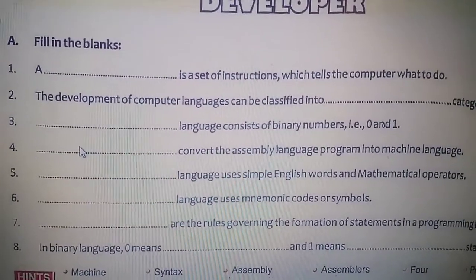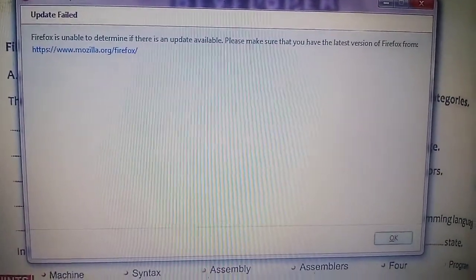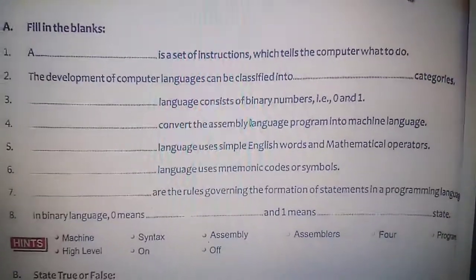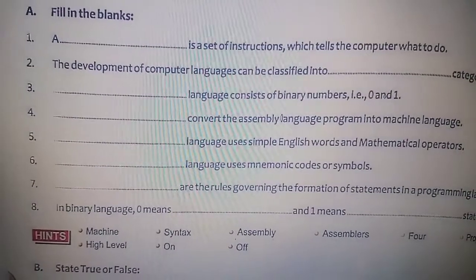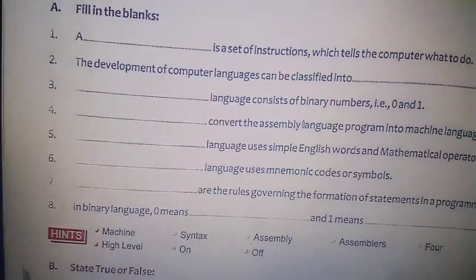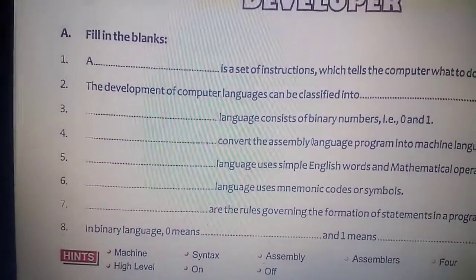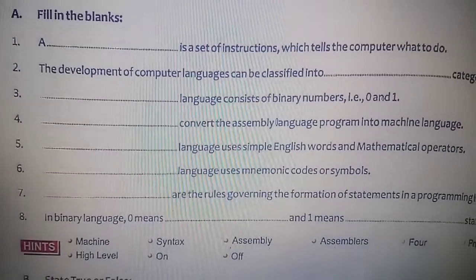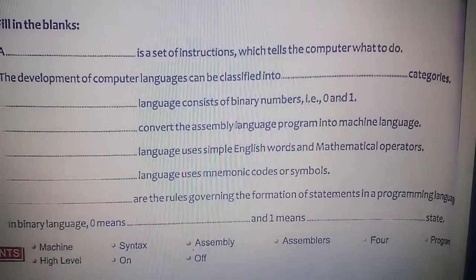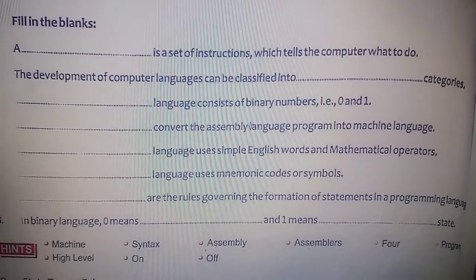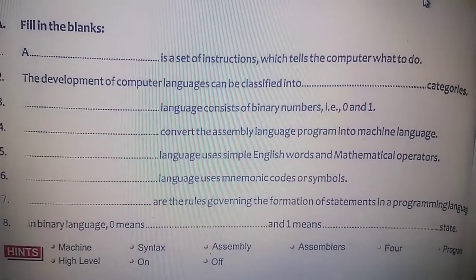Seventh: the dash are the rules governing the formation of statements in a programming language. The answer is syntax — syntax are the rules governing the form of statements in a programming language. Eighth: in binary language, zero means off and one means on. So these are the on and off states.